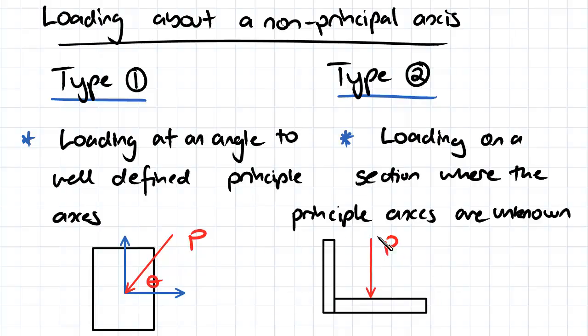The second type or occasion you might have when you want to be using these formulas is when you've got a complex shape where you actually don't know where the principal axes are. There's no axis of symmetry here, and so we're not actually sure at the moment where the principal axes are and therefore we'd need to work out where they were.